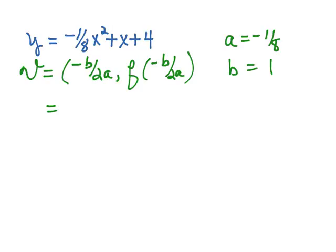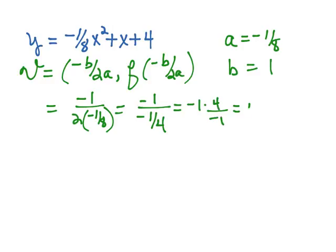So negative b over 2a is going to be negative 1 over 2 times negative one-eighth, which is equal to negative 1 over negative one-fourth, which is negative 1 times 4 over negative 1, which equals 4. So the x-coordinate of our vertex is 4.